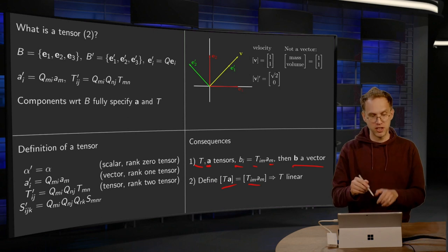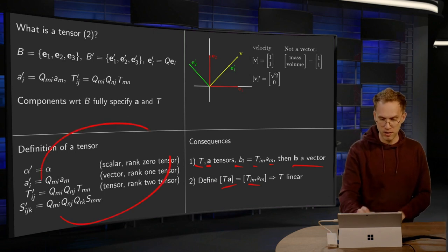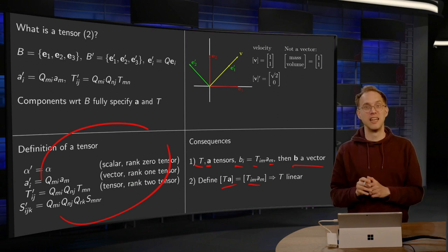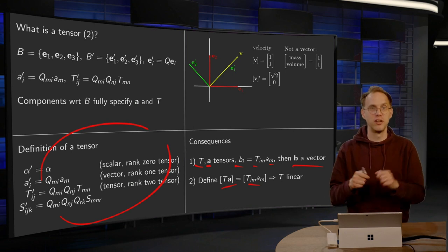So this definition over here, with the transformation rules, in fact implies the linearity of the rank 2 tensor on the vectors as we did it before.